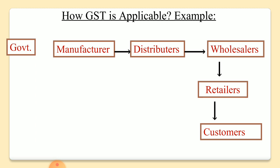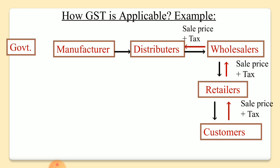Through this distribution channel, goods are distributed. Customers are the ultimate consumers. Customers pay the retailer the sales price plus tax. Retailers pay the wholesaler the sale price plus tax. Wholesalers pay distributors the sale price plus tax. Distributors pay manufacturers the sale price plus tax. And finally, manufacturers pay tax to the government. Government is the tax collector and customers are the taxpayers, but government cannot directly collect tax from customers — it follows this channel process. This is indirect tax.